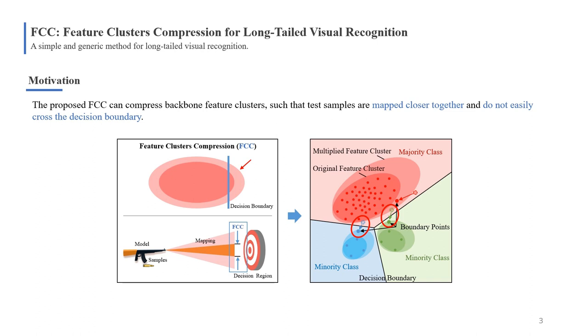Inspired by this, we propose a very simple method, namely FCC, to compress feature clusters, making them more tightly mapped and bringing boundary points back within the decision boundary, as shown in the right figure. If the model is learned again, our FCC can make it better aligned to the decision region.